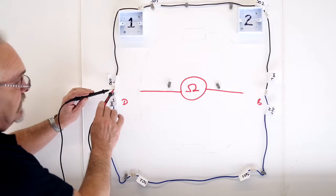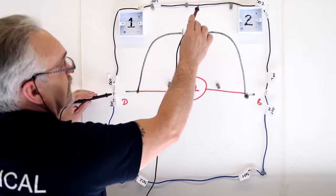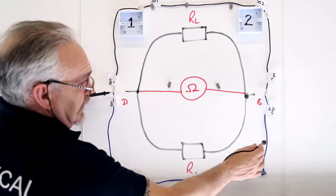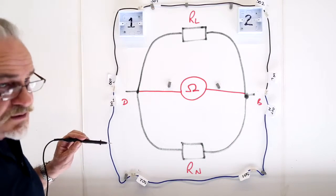My meter is sending a current around two paths. Through the line, and through the neutral, giving me a reading of resistance.